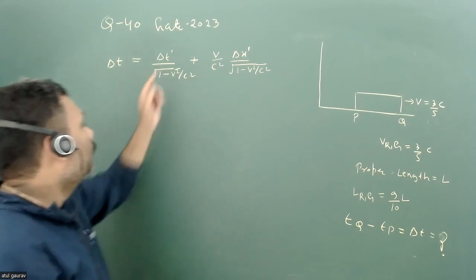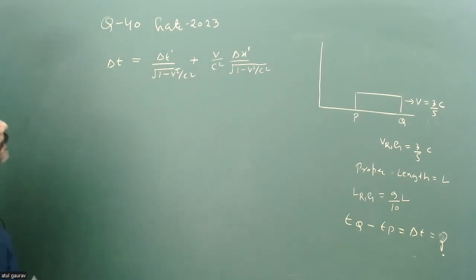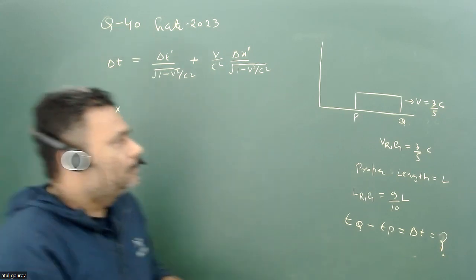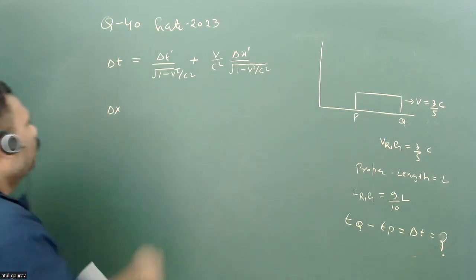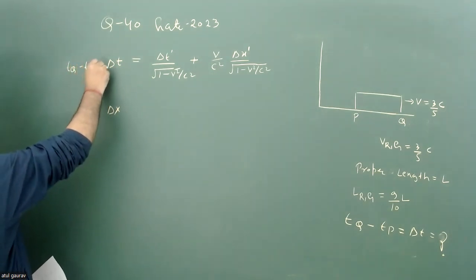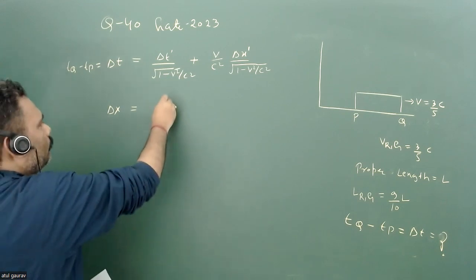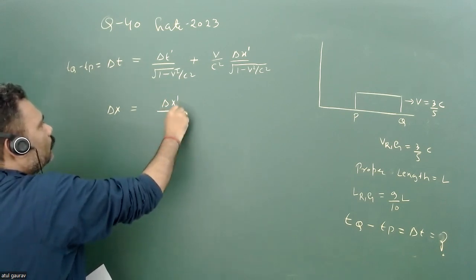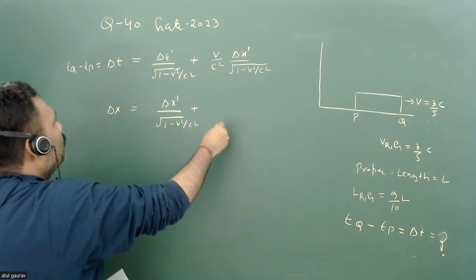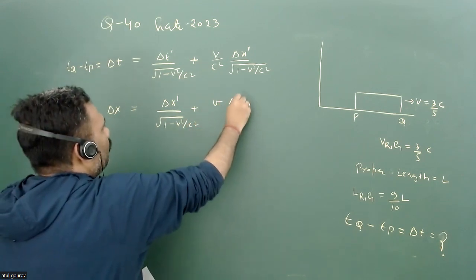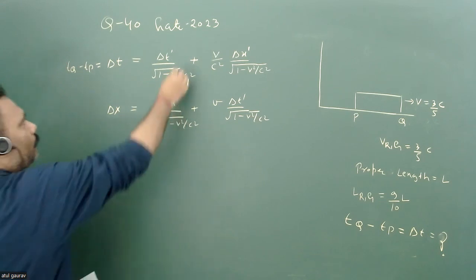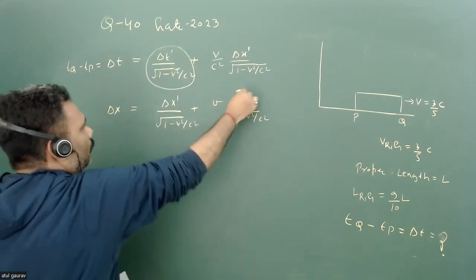To find delta t', we use the other given information. Delta x is the separation of the two points with respect to the ground, and delta t is tQ minus tP with respect to the ground. We use: delta x equals delta x' times root of (1 minus v²/c²) plus v times delta t' divided by root of (1 minus v²/c²).